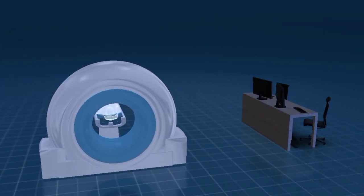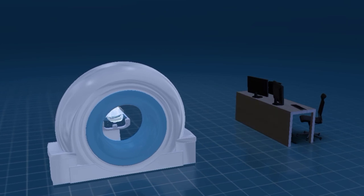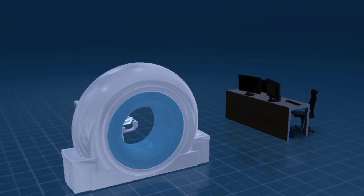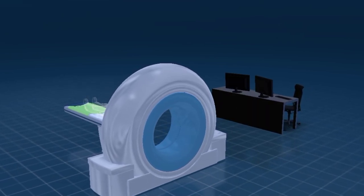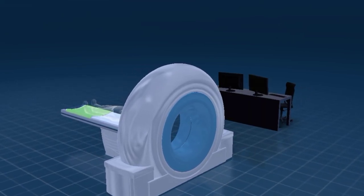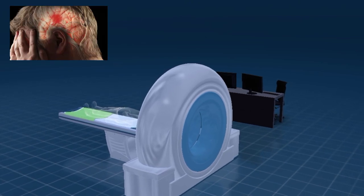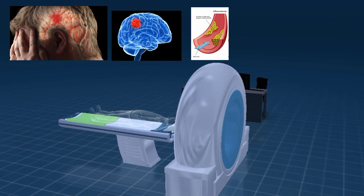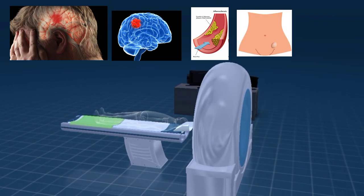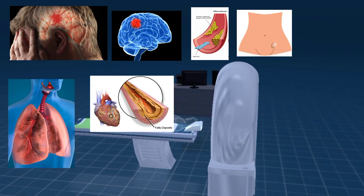Computed tomography is commonly used to examine the head, the chest, the abdominal organs, and the blood vessels. With the help of this imaging technique, it is possible to diagnose medical conditions such as strokes, brain tumors, and arteriosclerosis, as well as abdominal tumors, lung disorders, or coronary artery diseases.